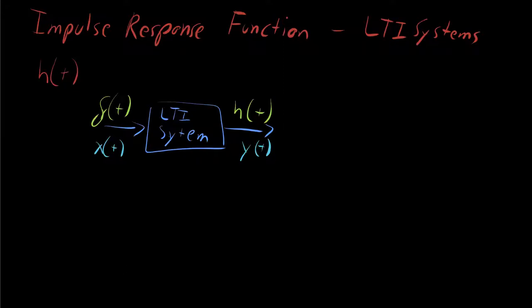If the input to an LTI system is the delta function, an impulse, an instantaneous pulse of energy, then the output we see is H(t), the impulse response function, which tells us how the system behaves to an instantaneous input.